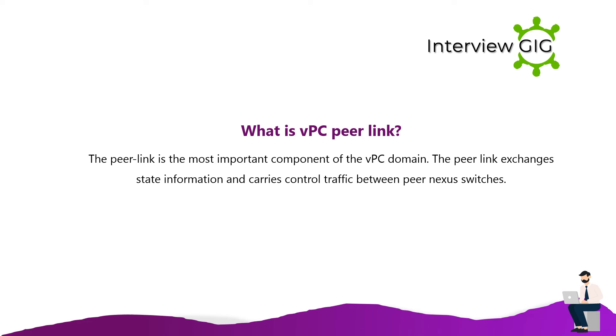What is VPC Peer Link? The Peer Link is the most important component of the VPC domain. The Peer Link exchanges state information and carries control traffic between peer Nexus switches.